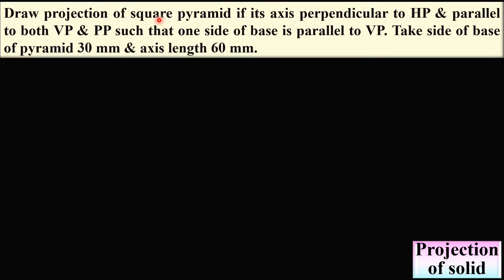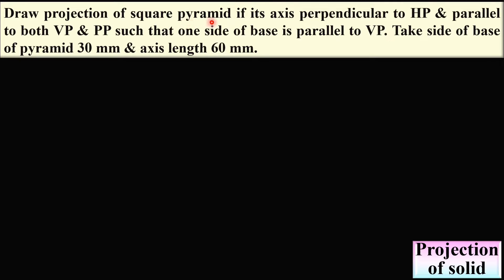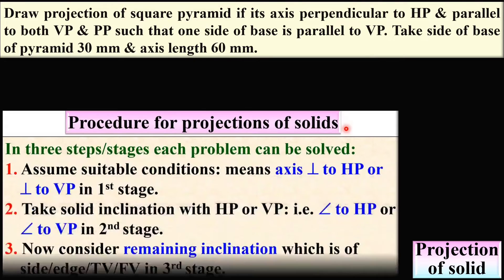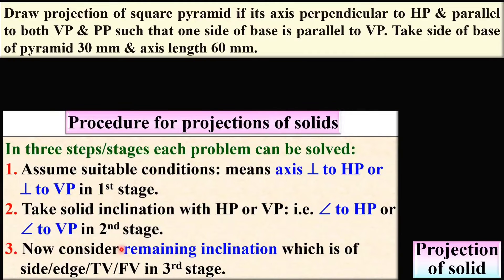Here you have to imagine the square pyramid in your mind. Generally you can imagine the base must be a polygon and the top is the apex point. So this is the square pyramid. You have to follow these three stages — or you can say three steps — for any problem related to the projection of solids.